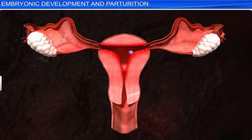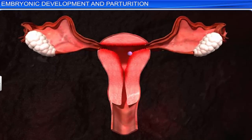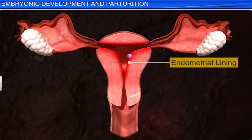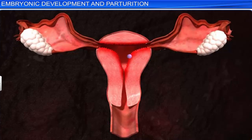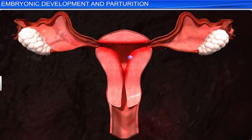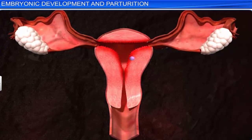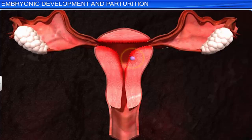As the trophoblast grows outwards and penetrates the endometrial lining of the uterus, the blastocyst, with a developing embryo, gets implanted in the uterus, and pregnancy is initiated.